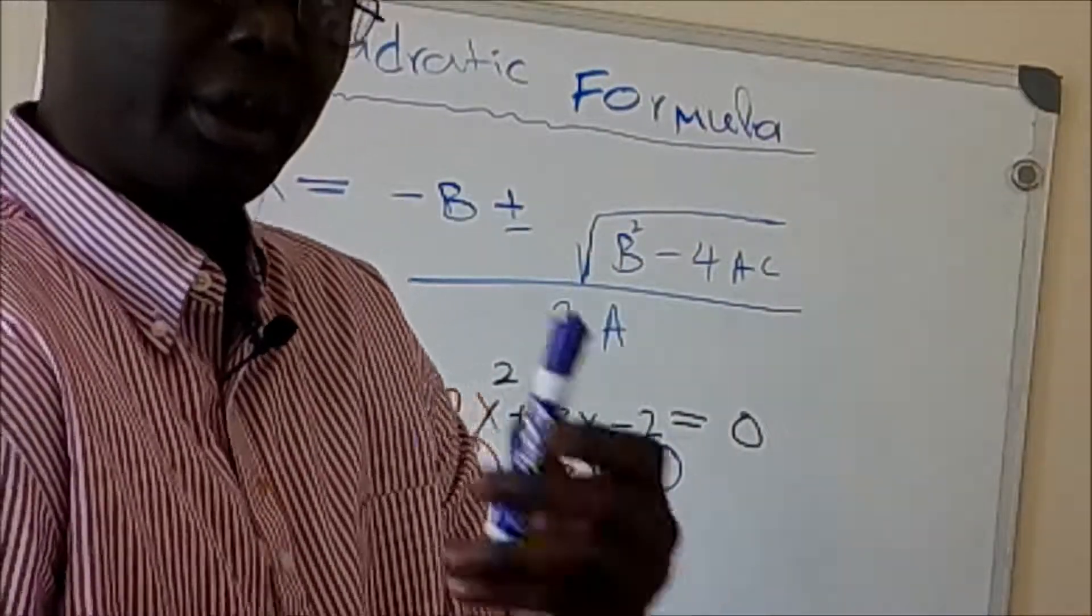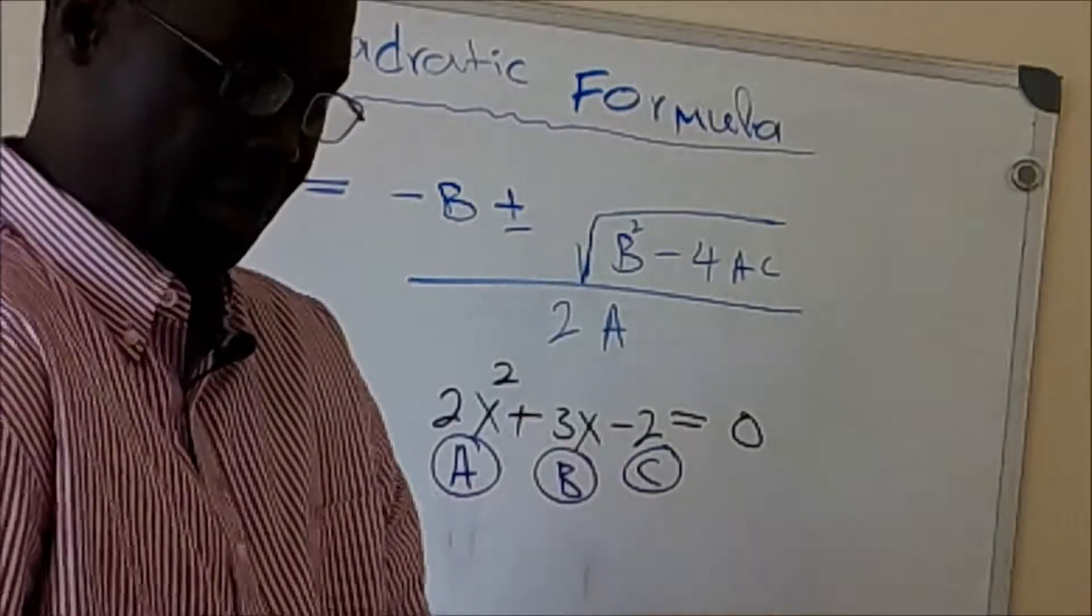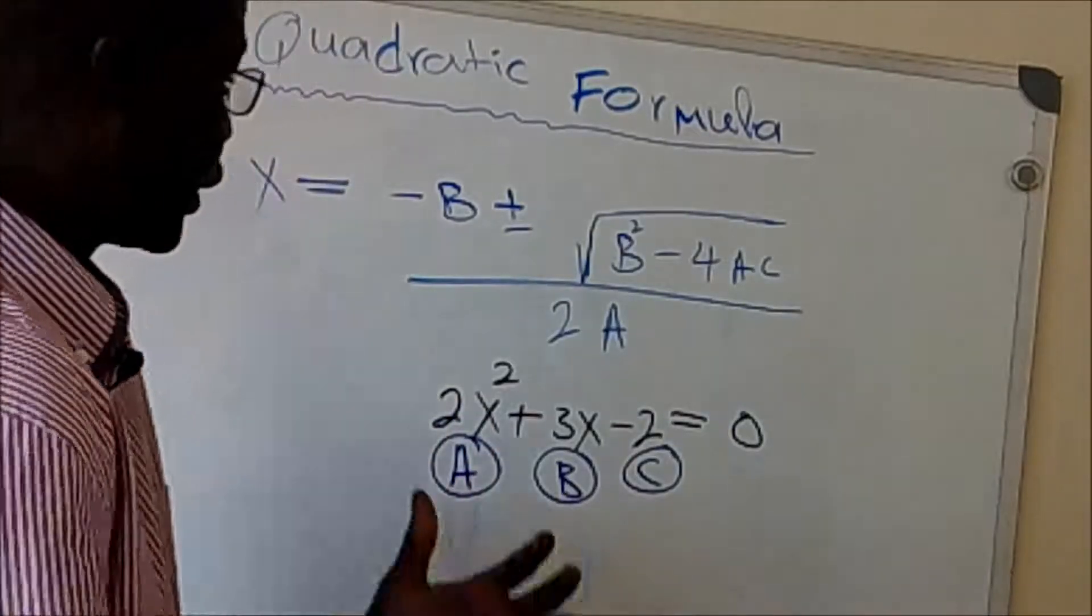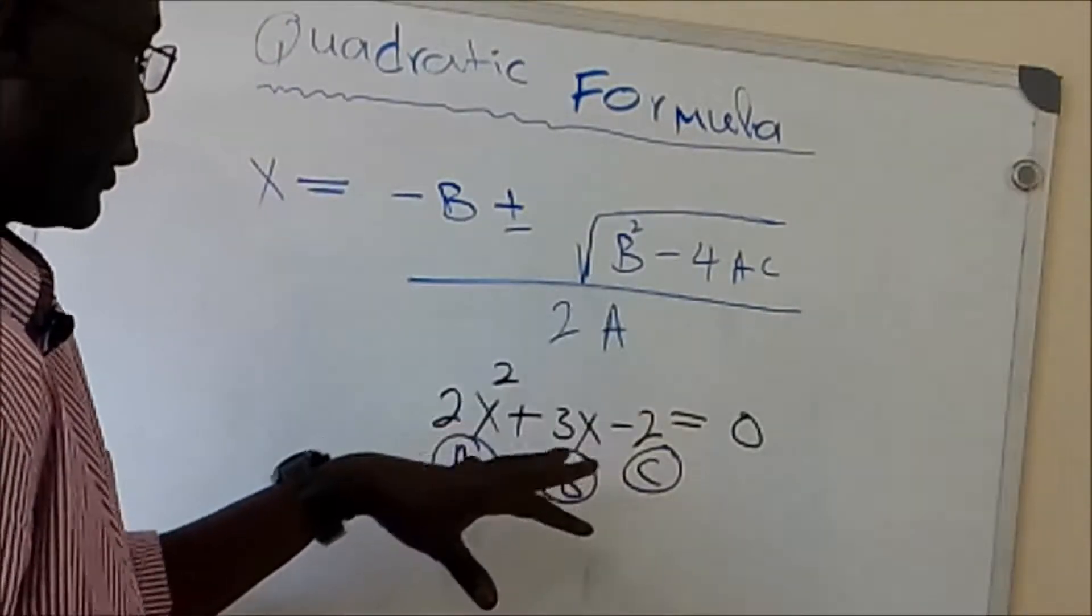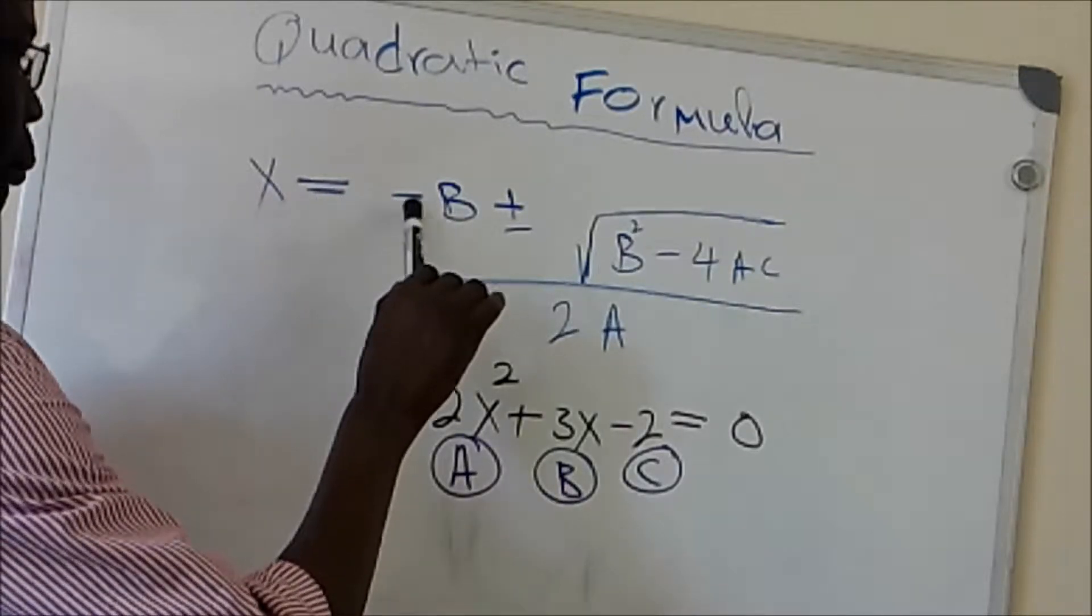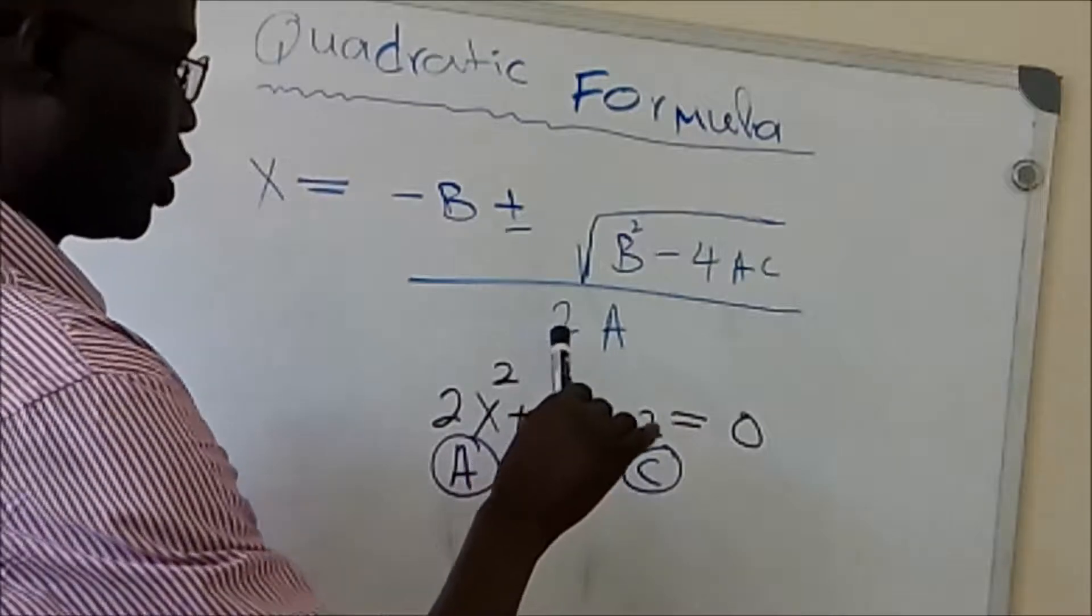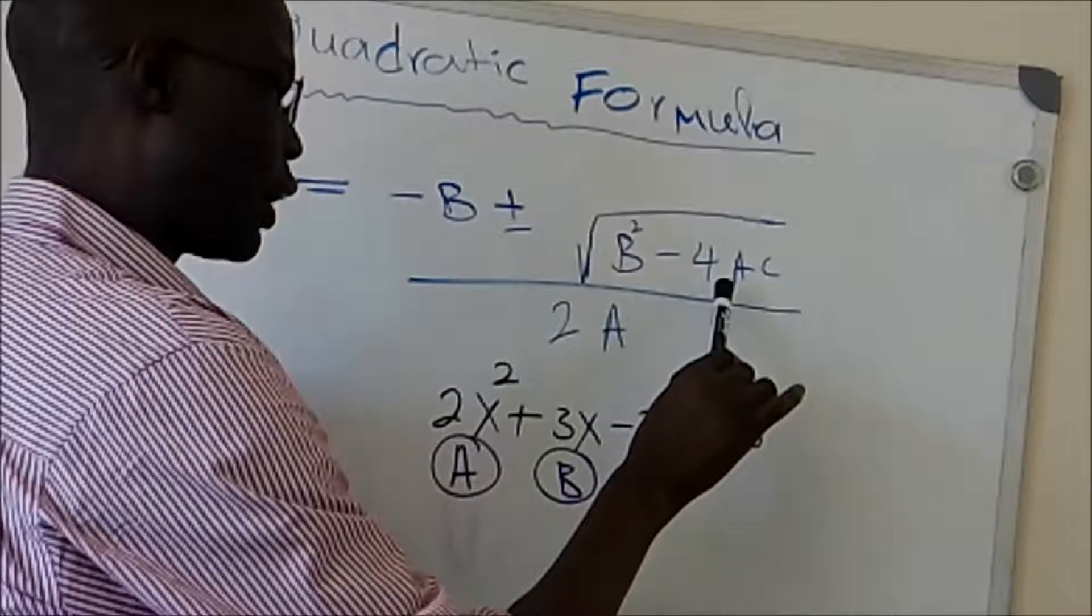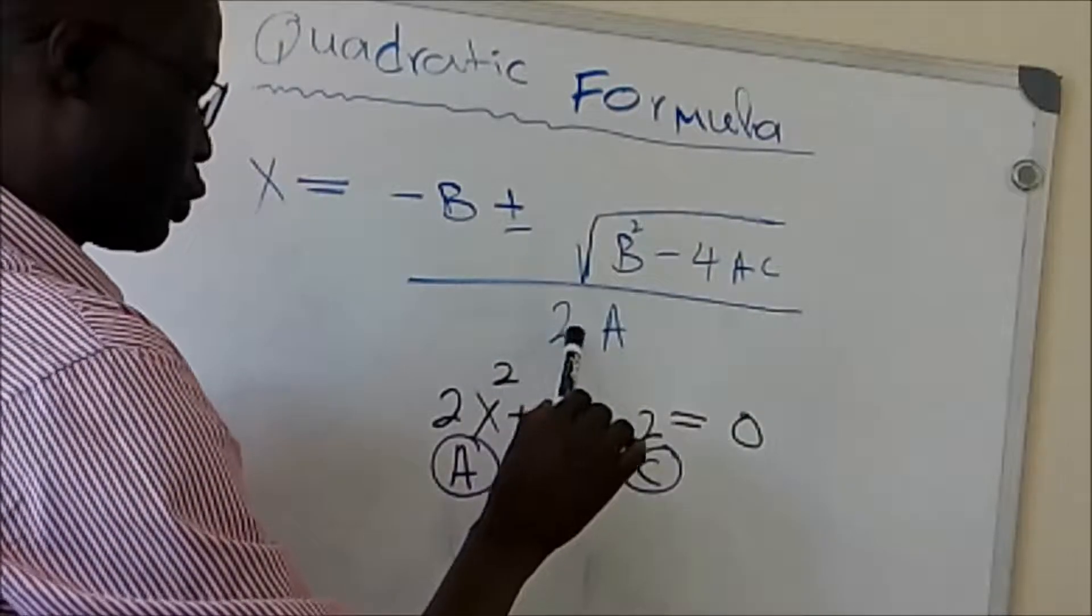As you can see here, X equals minus B plus or minus the square root of B squared minus 4AC, all divided by 2A. This is the quadratic formula we'll use to find the value of X.